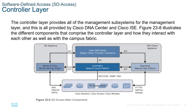The controller layer provides all the management subsystems for the management layer, provided by Cisco DNA Center and Cisco ISE. Authentication for ISE uses AAA RADIUS or EAP. The assurance data platform uses HTTPS, NetFlow, or Syslog. The SD-Access fabric can be accessed via the Cisco DNA Center GUI. The automation network control platform uses NETCONF, SNMP, or SSH. To interact with the Cisco DNA Center it uses APIs, and the ISE appliance also connects via API.